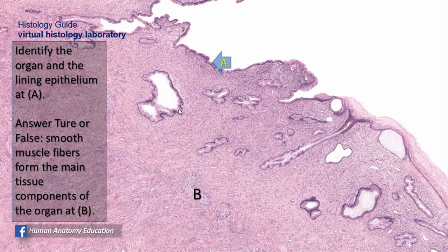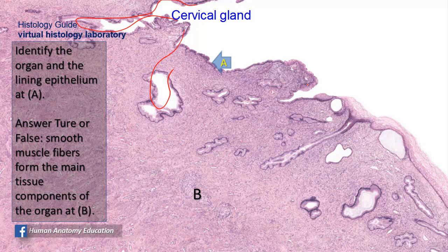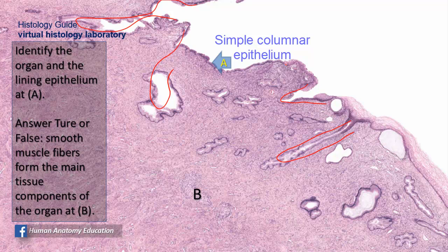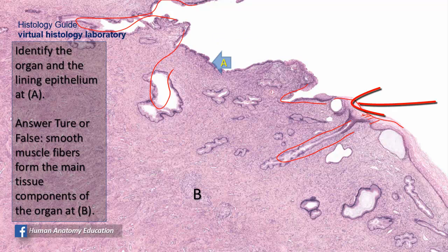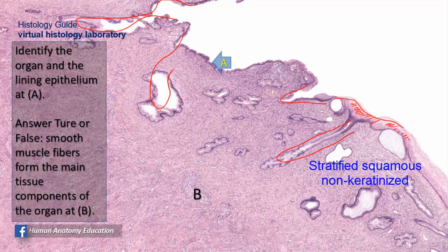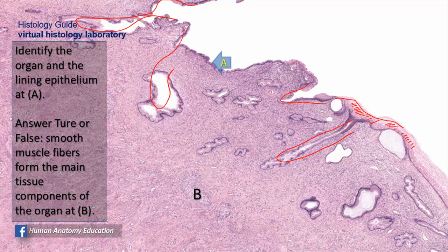Identify the organ and the lining epithelium at A. This is a section of the cervix. You can see these folds, which constitute the cervical glands, where mucus secretion takes place and the mucus goes down into the vagina. Part of the cervix is lined by simple columnar epithelium, and then at one point this simple columnar epithelium is converted into stratified squamous non-keratinized epithelium. The part lining the cervical canal, where the cervical glands open, is lined by the same epithelium as the rest of the uterus.